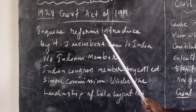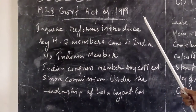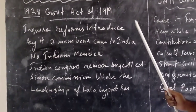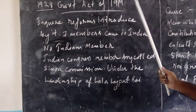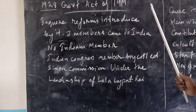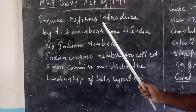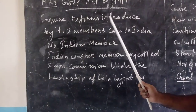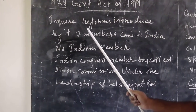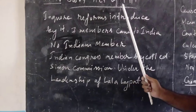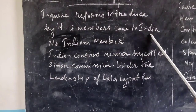After that tragic incident, in 1919 a new Government of India Act was passed, and according to that act some reforms were introduced. To enquire whether those reforms were being implemented in India or not, the British government sent 7 members to India.